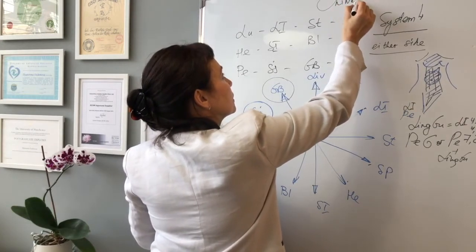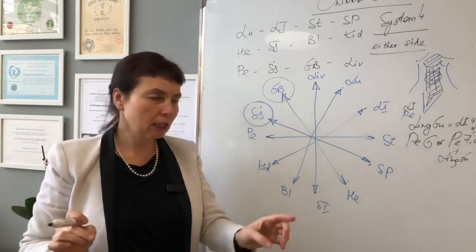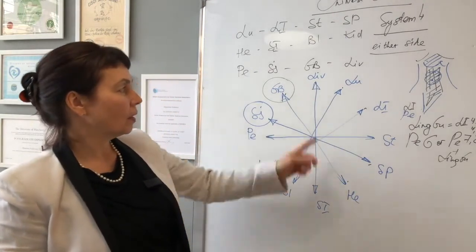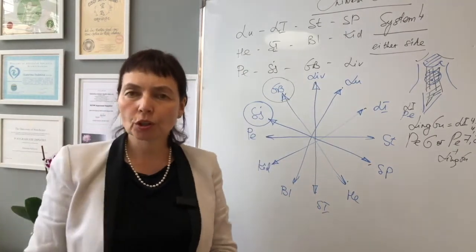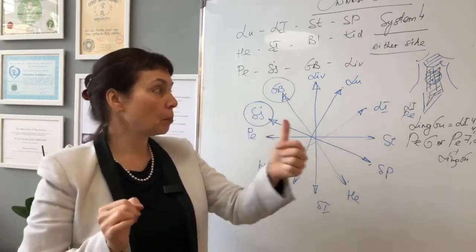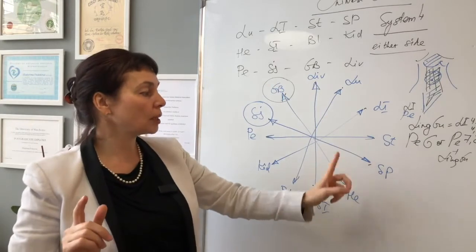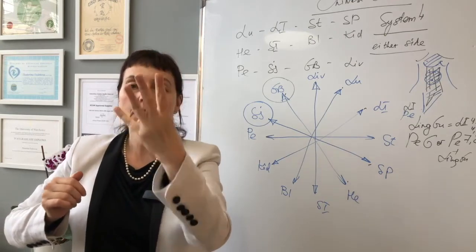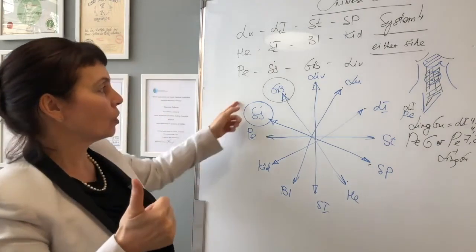System 4, Chinese clock. How to remember the meridian on the opposite side of Chinese clock easily? If you've forgotten that liver will treat small intestine according to system 4, what you do is start singing songs, counting with your fingers. Start with lung, large intestine, stomach, spleen, heart, small intestine, bladder, kidney, pericardium, triple heater, gallbladder, liver.